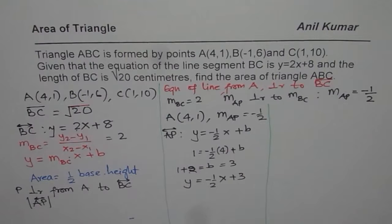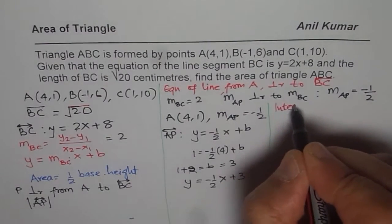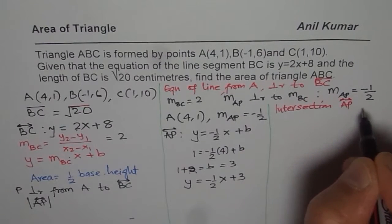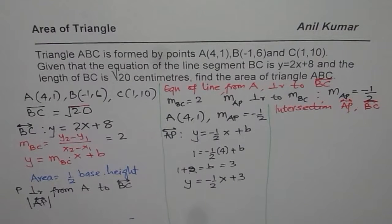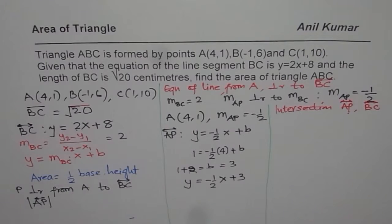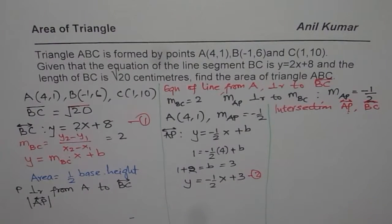Now we need to find the point P itself — the intersection of line AP and line BC. To find the intersection, we equate the two equations. Let equation 1 be y = -½x + 3 (line AP) and equation 2 be y = 2x + 8 (line BC). Since they share a common point P, we set them equal.